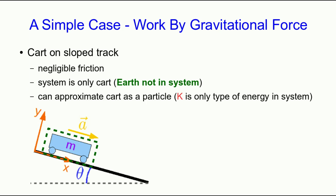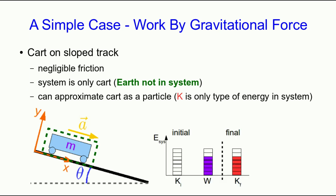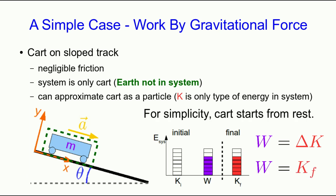We can approximate this cart as a particle, so kinetic energy is the only type of energy in the system. Our energy bar chart shows that initially the cart is at rest, so K_i is zero, and there's external work done resulting in some non-zero kinetic energy later. The work by definition is just the change in kinetic energy, and since we start from rest, the work equals the final kinetic energy.